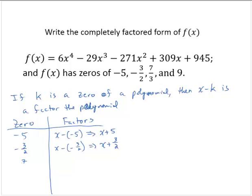We have a zero at 7 thirds, so that means we have a factor of x minus 7 thirds. And we have a zero of 9, which means we have a factor of x minus 9.